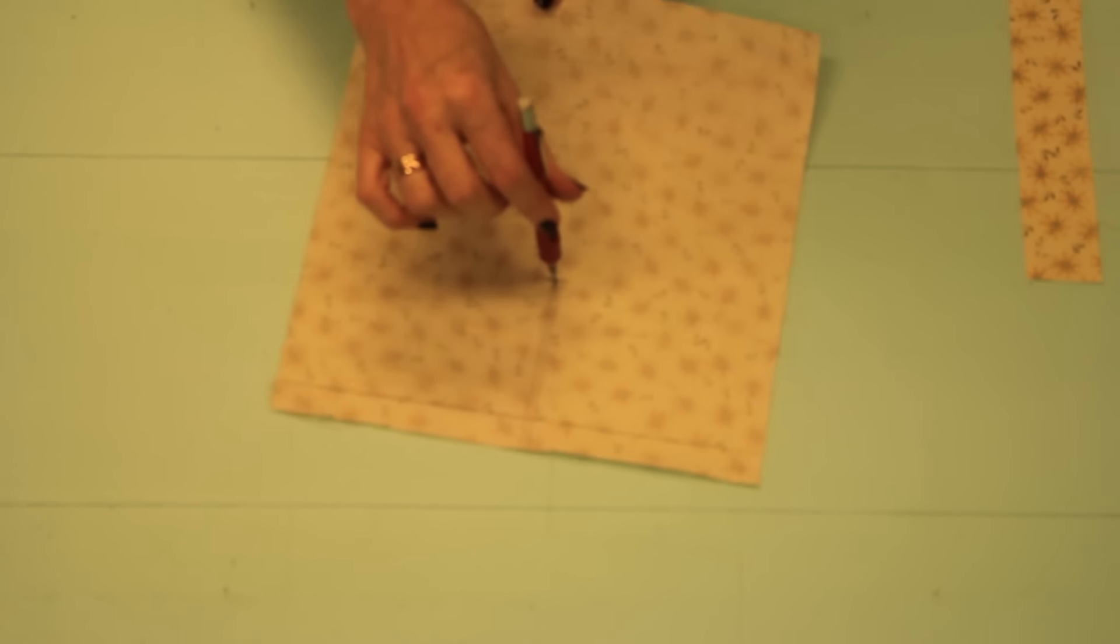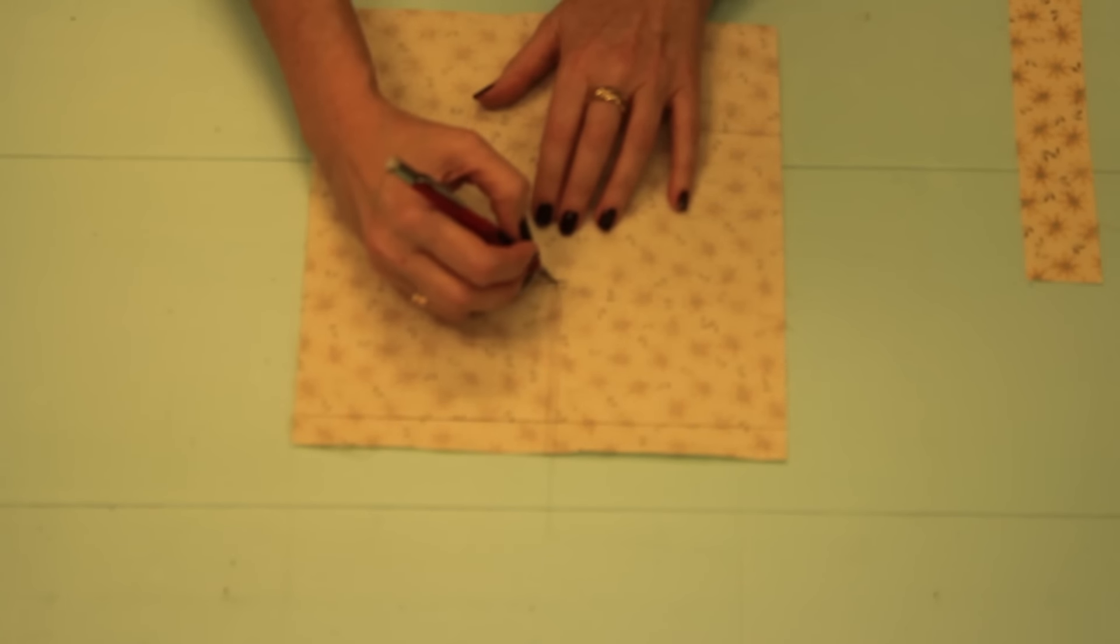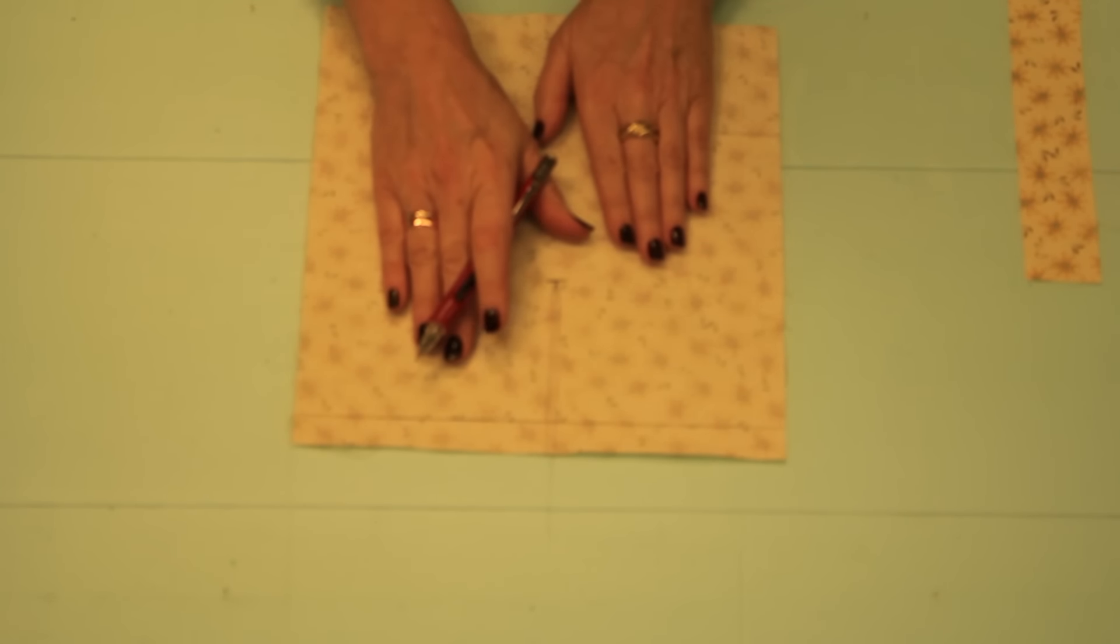Lift your presser foot, pivot, and then stitch up the other side. What that does is firms up this opening because next we're going to cut it open.